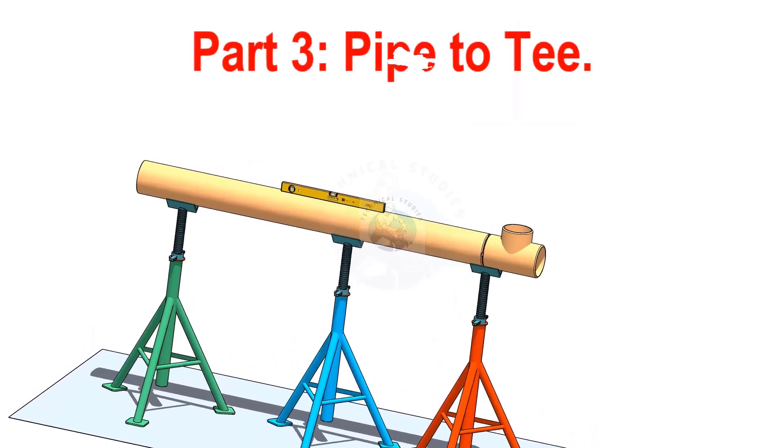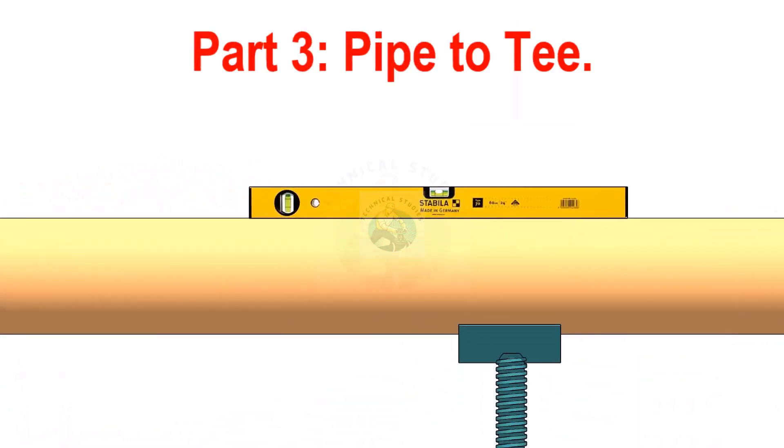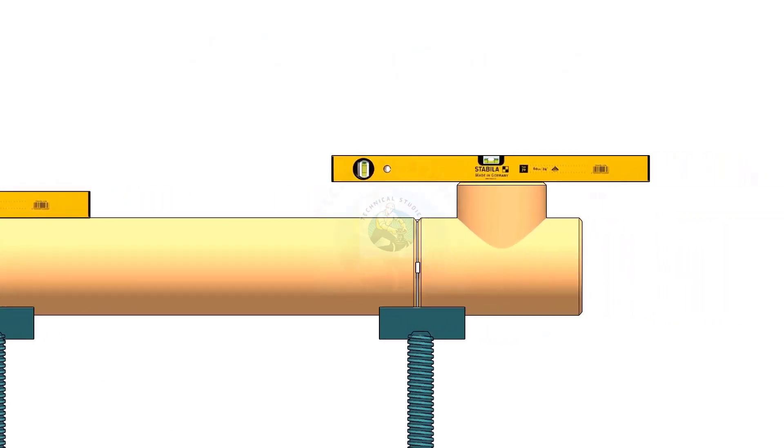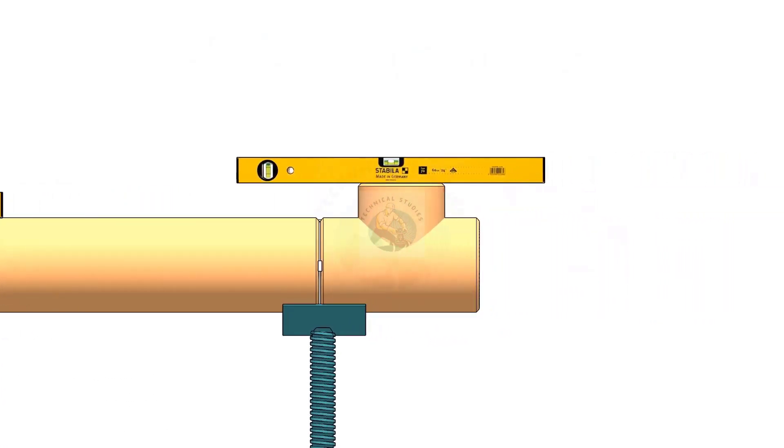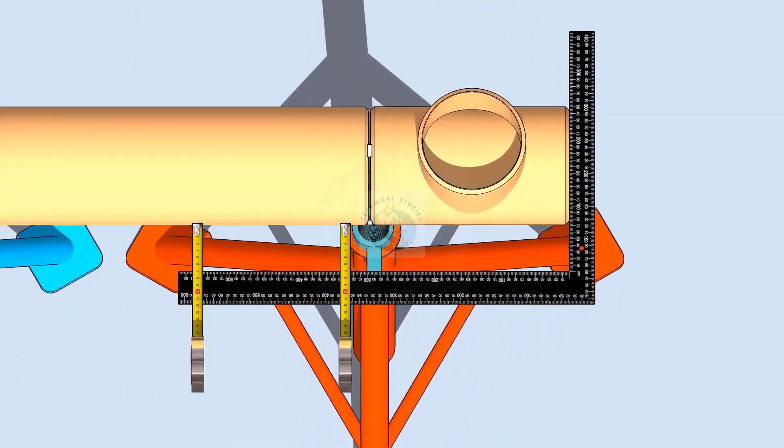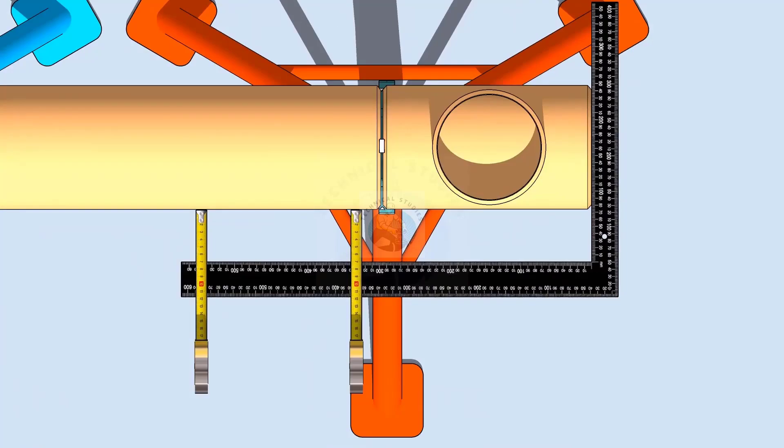When you check a pipe to T fit up, level the pipe first. Then check the level of the T. After that, hold a large right angle on the face of the T and measure if the distances are the same.